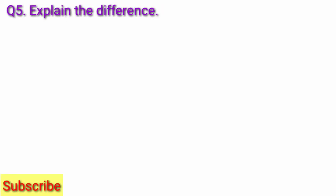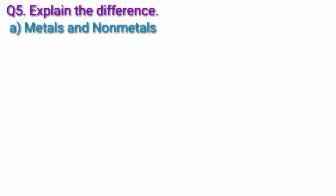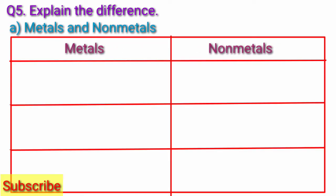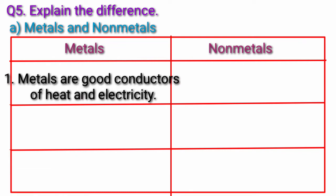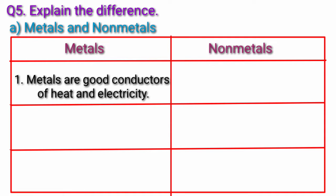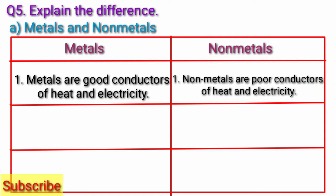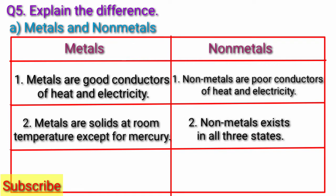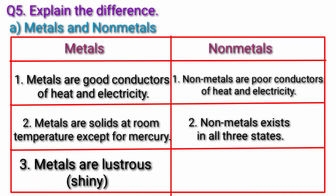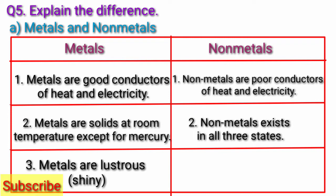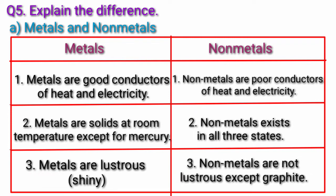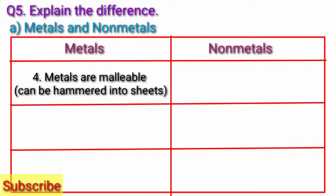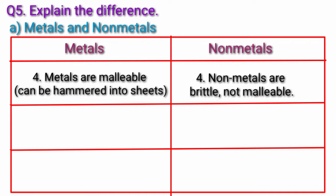Question 5: How do you explain the difference? Question A: Metals and non-metals. Answer. The difference between metals and non-metals is given below. 1. Metals are good conductors of heat and electricity; non-metals are poor conductors of heat and electricity. 2. Metals are solids at room temperature except for mercury; non-metals exist in all three states. 3. Metals are lustrous and shiny; non-metals are not lustrous except graphite. 4. Metals are malleable; non-metals are brittle and non-malleable.